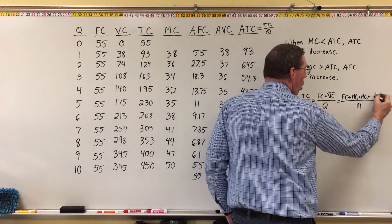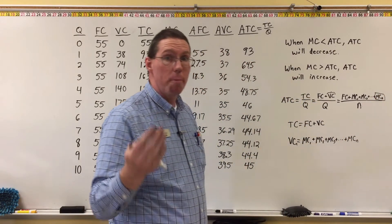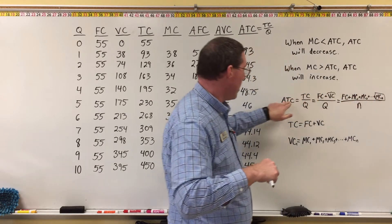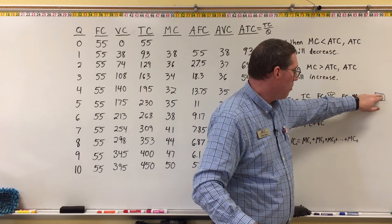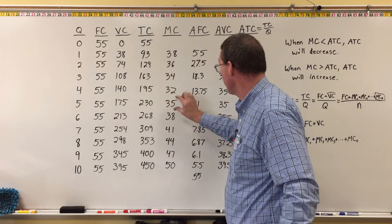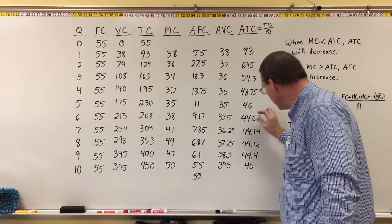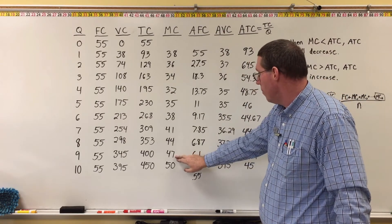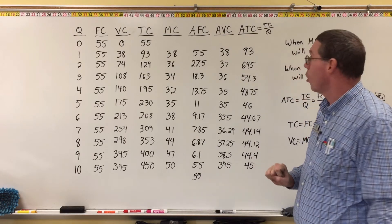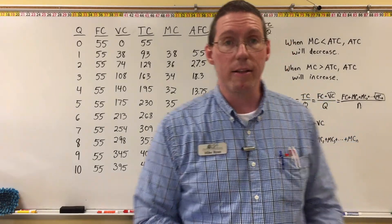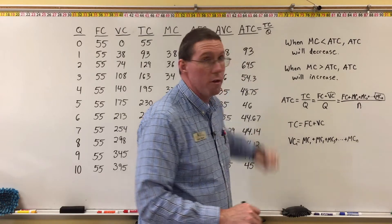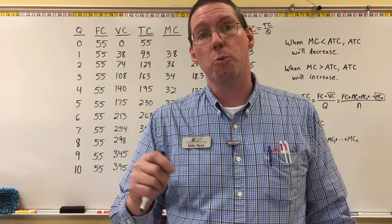When calculating average total cost, we're adding on one more marginal cost at a time. By the same averaging rule, if that marginal cost is larger than the current average total cost, ATC goes up; if it's smaller, ATC goes down. That's why when marginal cost is smaller than ATC, average total cost decreases. But eventually marginal cost — because it's increasing — will become larger than ATC, and then ATC will begin increasing.